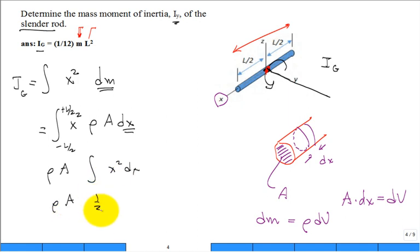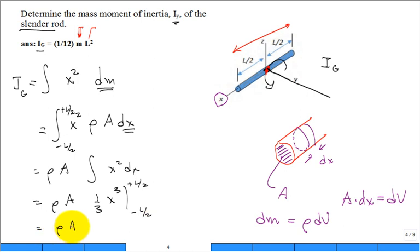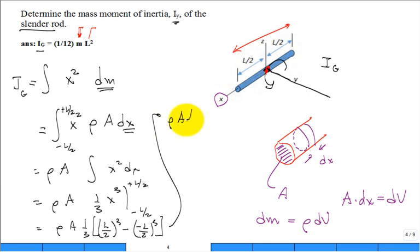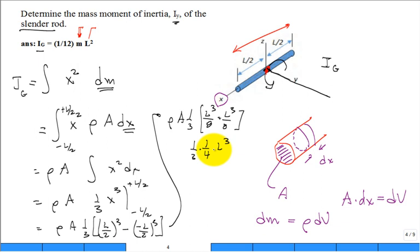Rho A — what is that integral? One third X cubed, evaluated from negative L over 2 to positive L over 2. So you pick up rho A times (1/3) times [L over 2 cubed minus (negative L over 2) cubed]. We pick up rho A times (1/3) and then you have L cubed over 8 plus L cubed over 8. One eighth plus one eighth is two eighths, or one fourth L cubed. So we have one third times one fourth times L cubed, with rho A — and so this is one twelfth.